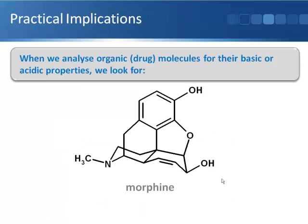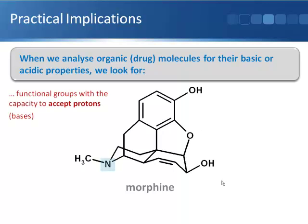To apply this acid base theory to analyzing organic molecules for their basic or acidic properties, when you look for functional groups that could act as an acid or a base, what you're actually looking for are functional groups with the capacity to accept protons and these would be basic functional groups within the molecule. We're looking for functional groups with the capacity to donate protons and these of course would be the acidic functional groups within the molecule.